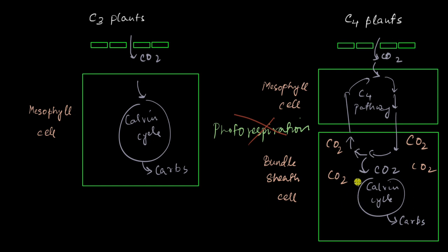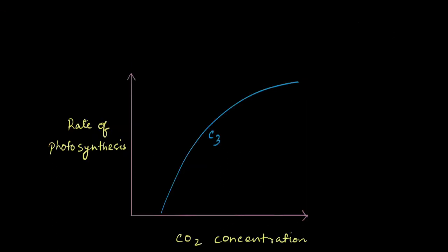So what does this mean with regards to our graph? So in C4 plants, as you've seen, the photosynthesis is more sensitive to CO2 concentration. That means at low CO2 concentrations themselves, the rate of photosynthesis is higher than what you would expect in a C3 plant.